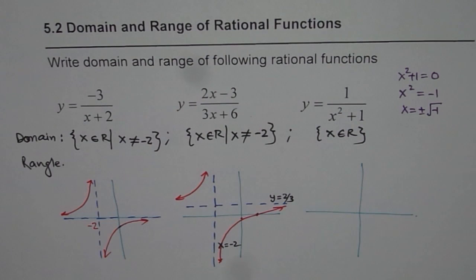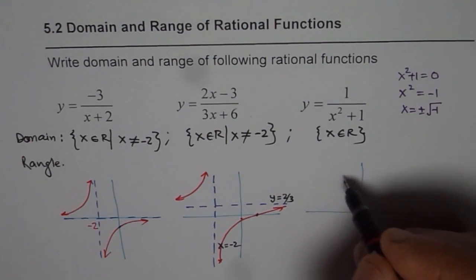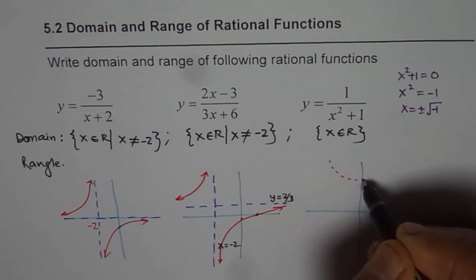Now, the third one is reciprocal of x square plus 1. Let me first sketch x square plus 1, and then we will do reciprocal of it. x square plus 1 will be a function which is kind of like this. So let us say this is 1.